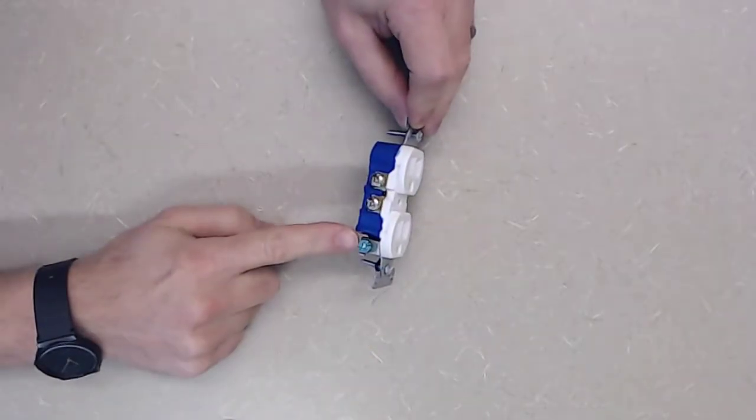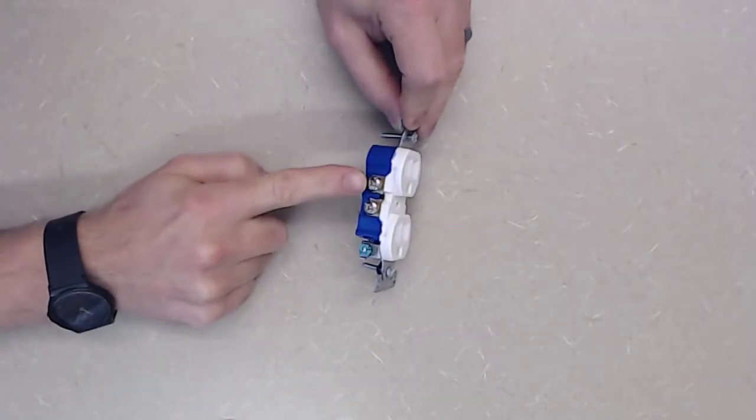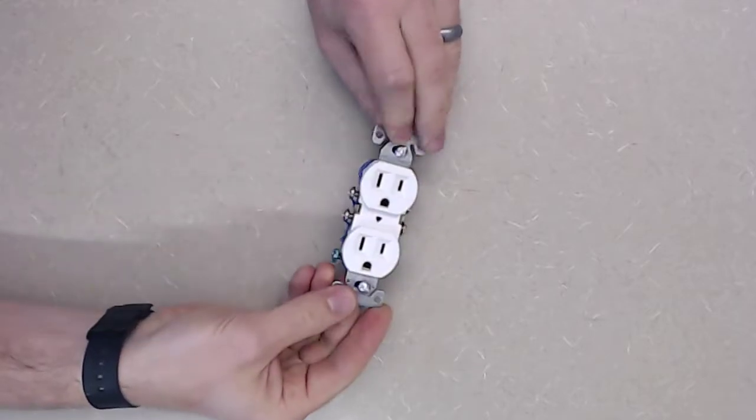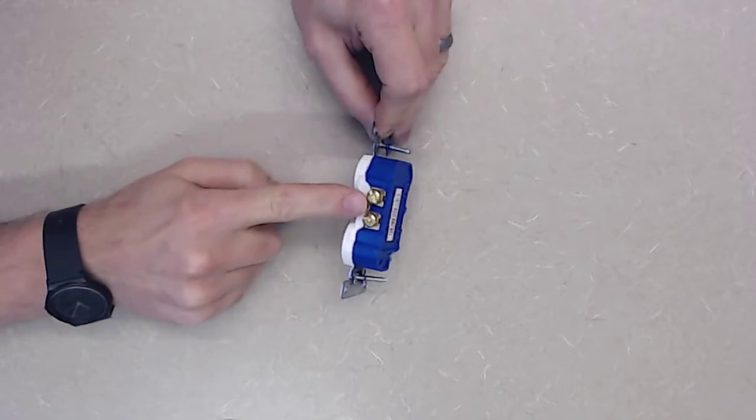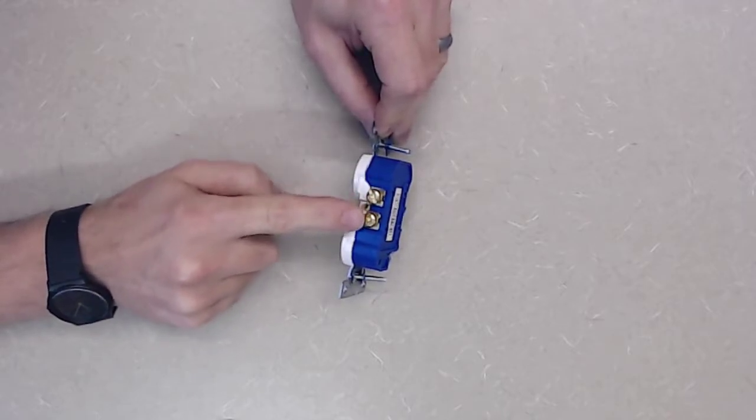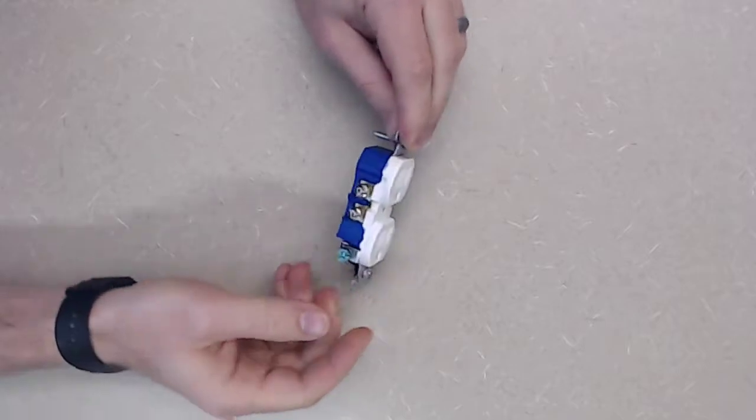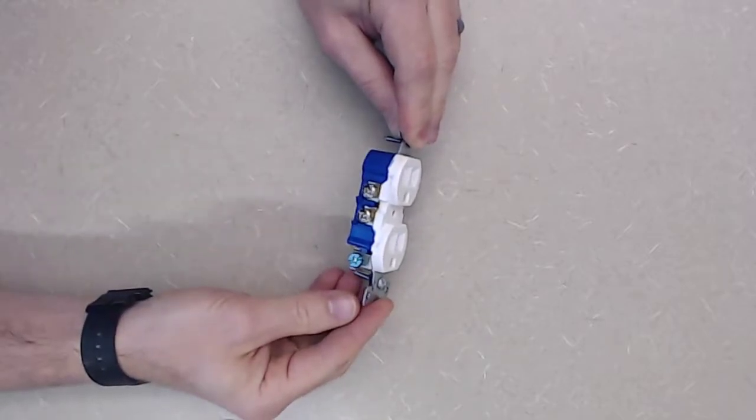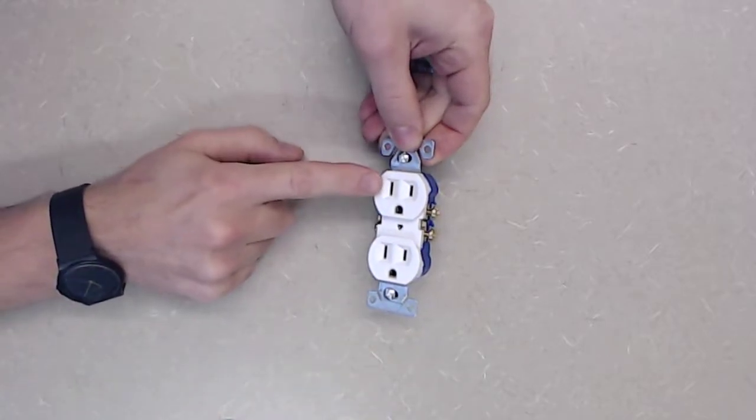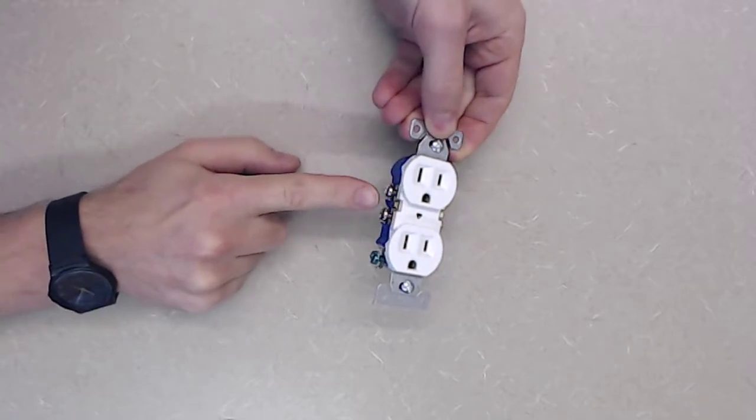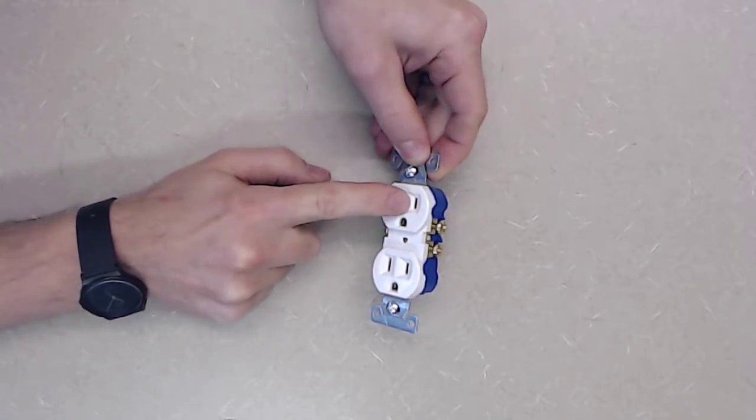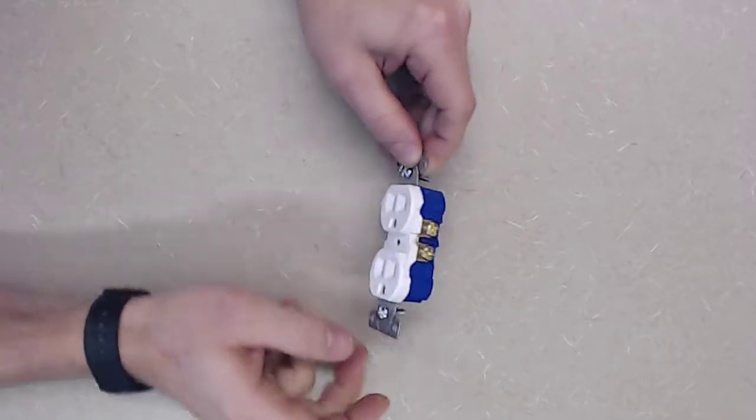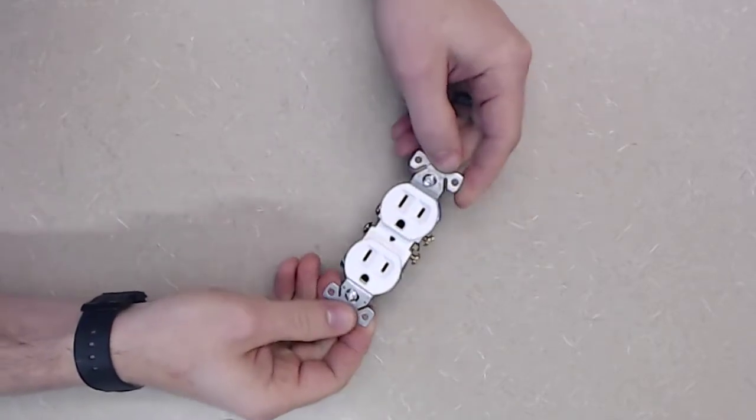On a receptacle we have our ground, then we have our white terminals or our neutral terminals, then the opposite side we have our black or our hot terminals. And this is a brass screw, whereas this is more of just a steel screw. Also note that we have our larger openings relate to our neutral. Our smaller openings on the plug relate to the hot. So that's also an important thing to note.